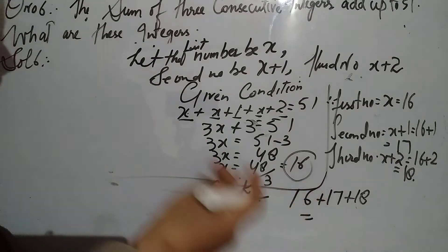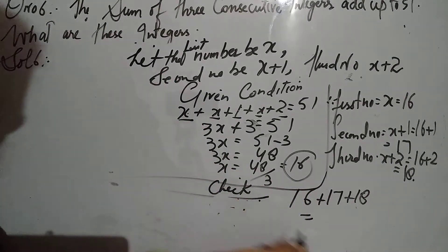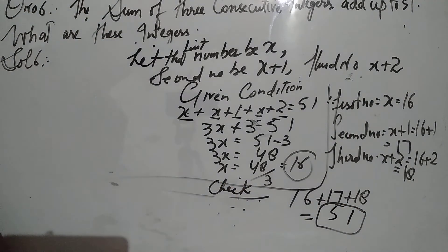8 plus 7 plus 6: 8, 11, 12, 14, 15, 6, 18, 19, 20 - it will come to 21, and 21 plus 3 that will be 51. So these are the three consecutive numbers.